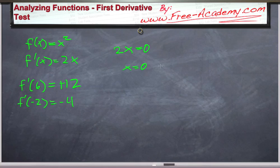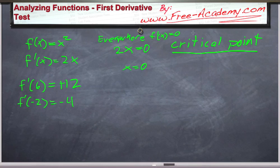And at every point that x, or at every single point the first derivative is equal to 0, you get what is known as a critical point. Everywhere f prime of x equals 0 is a critical point.